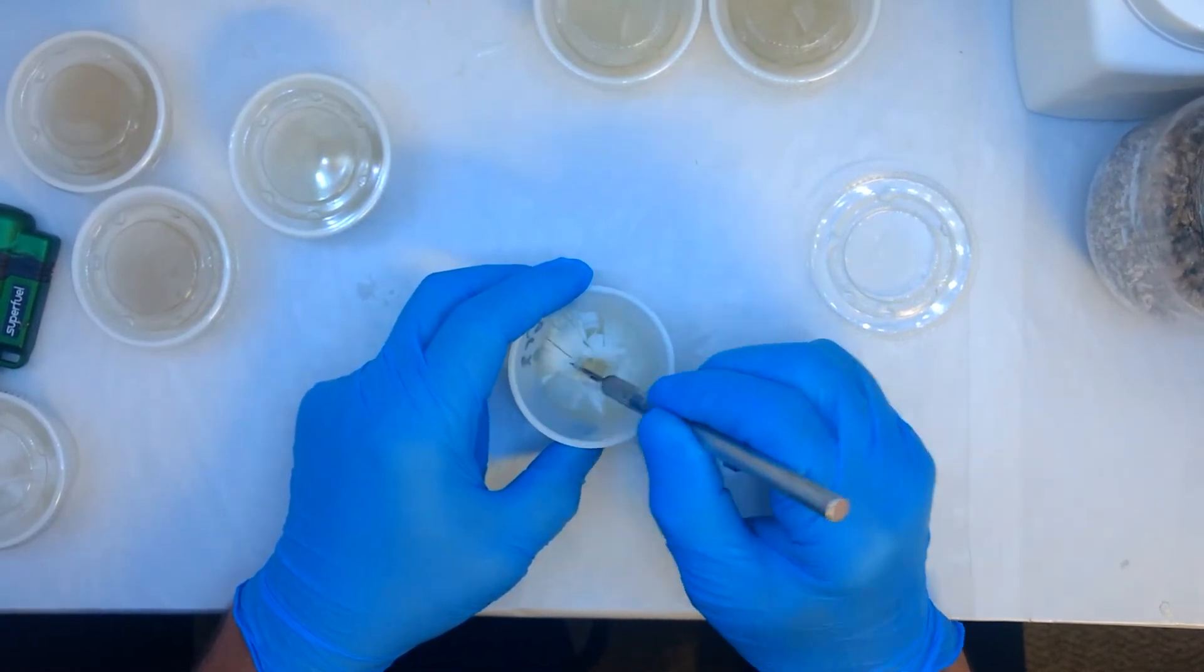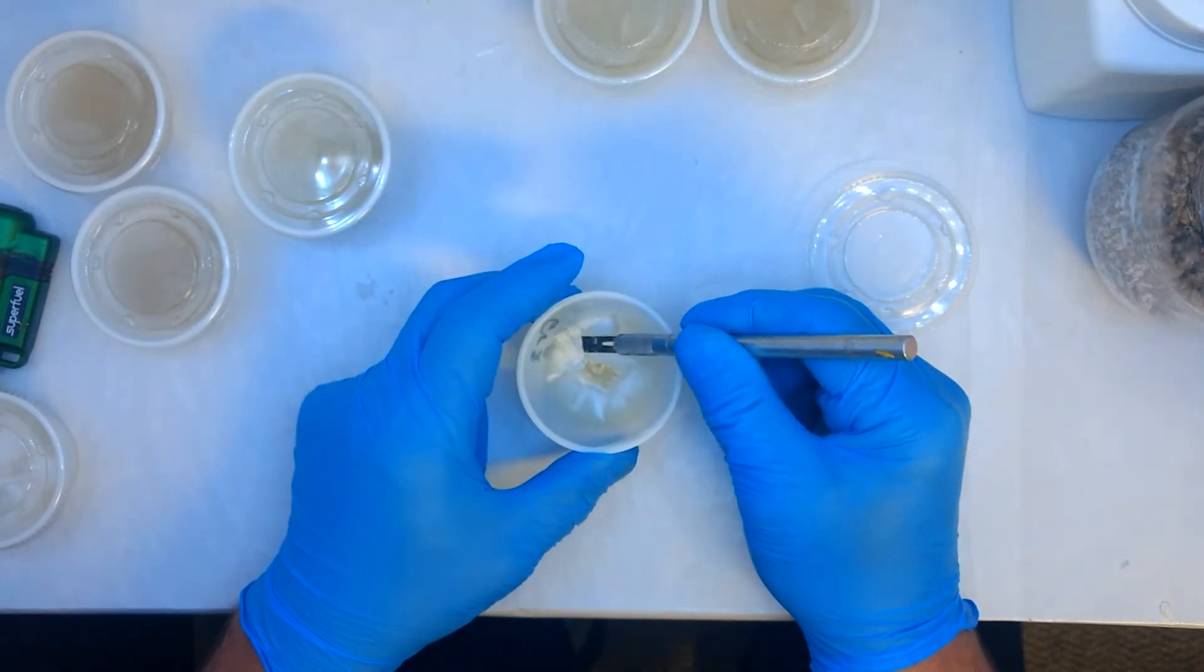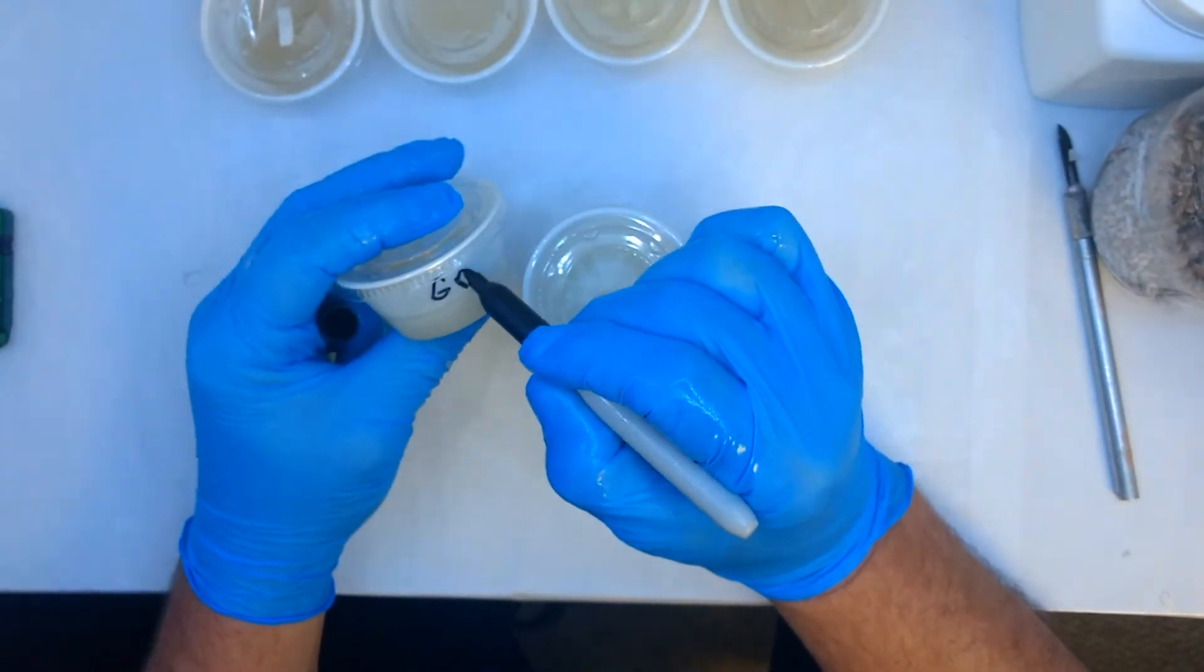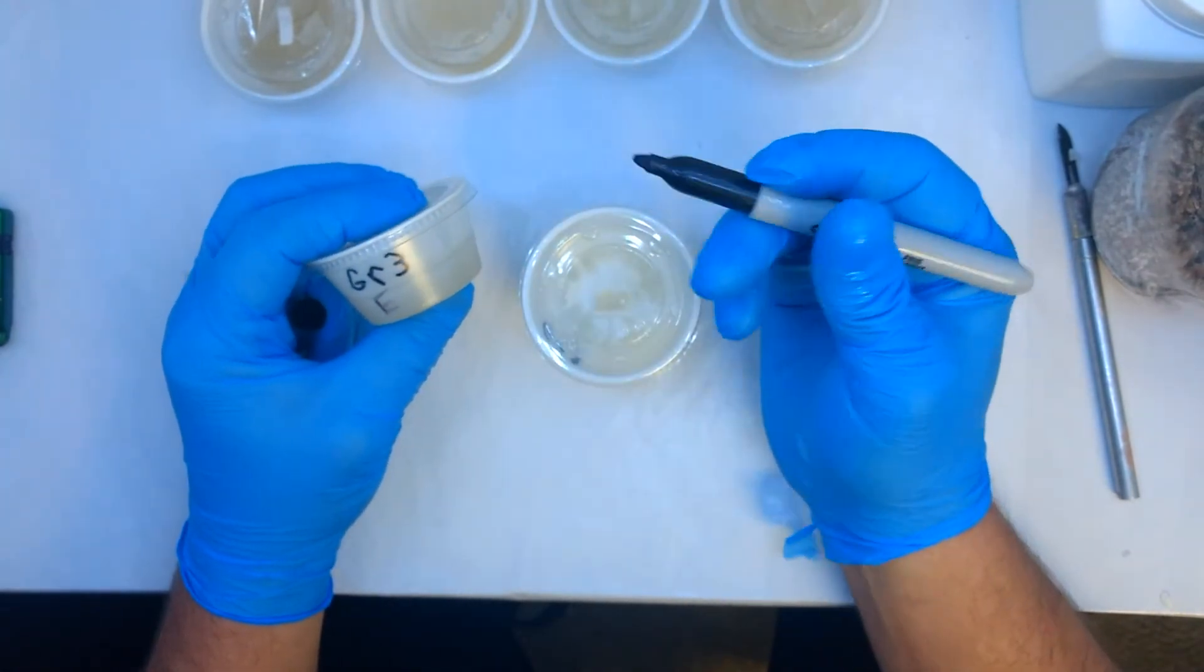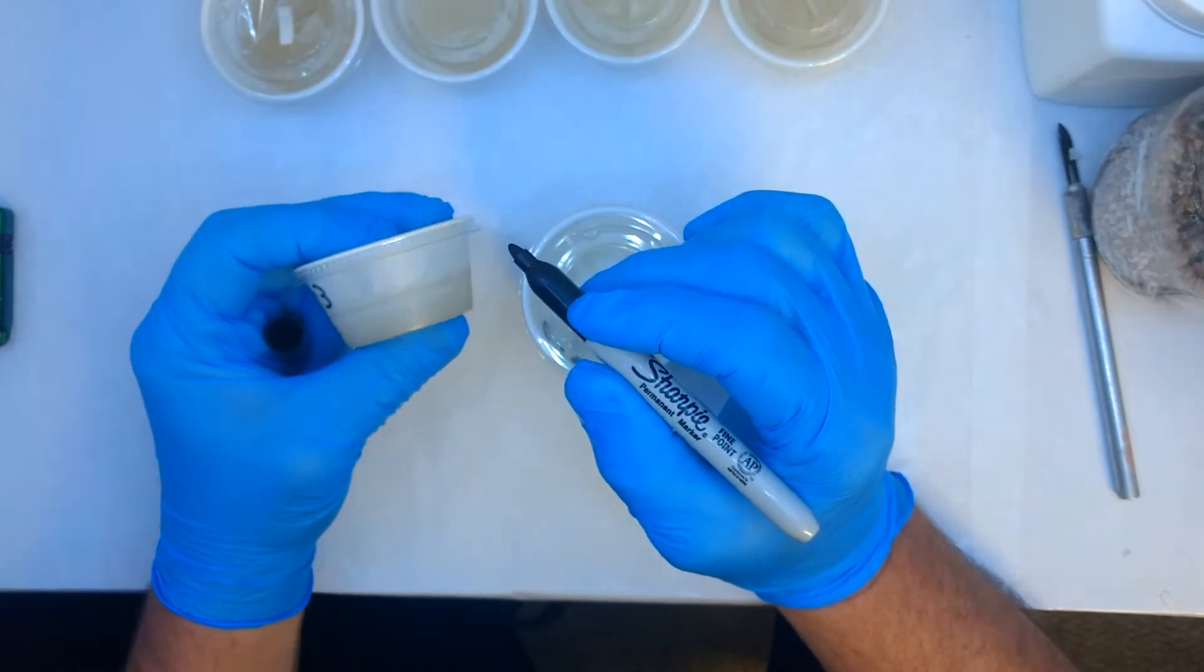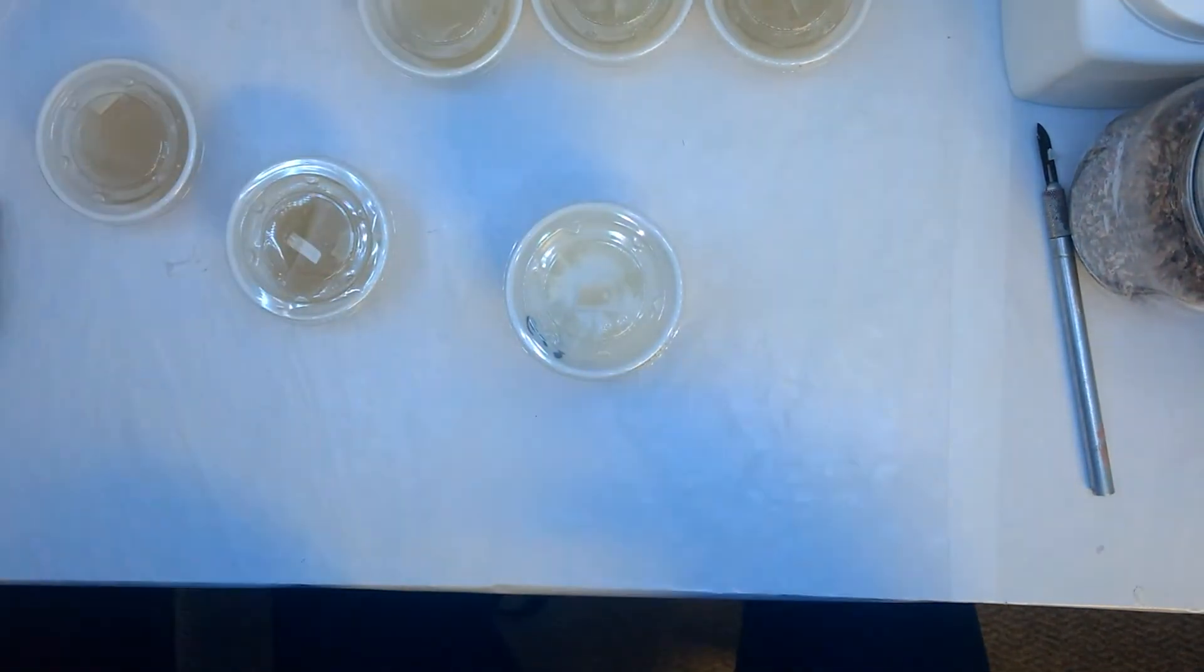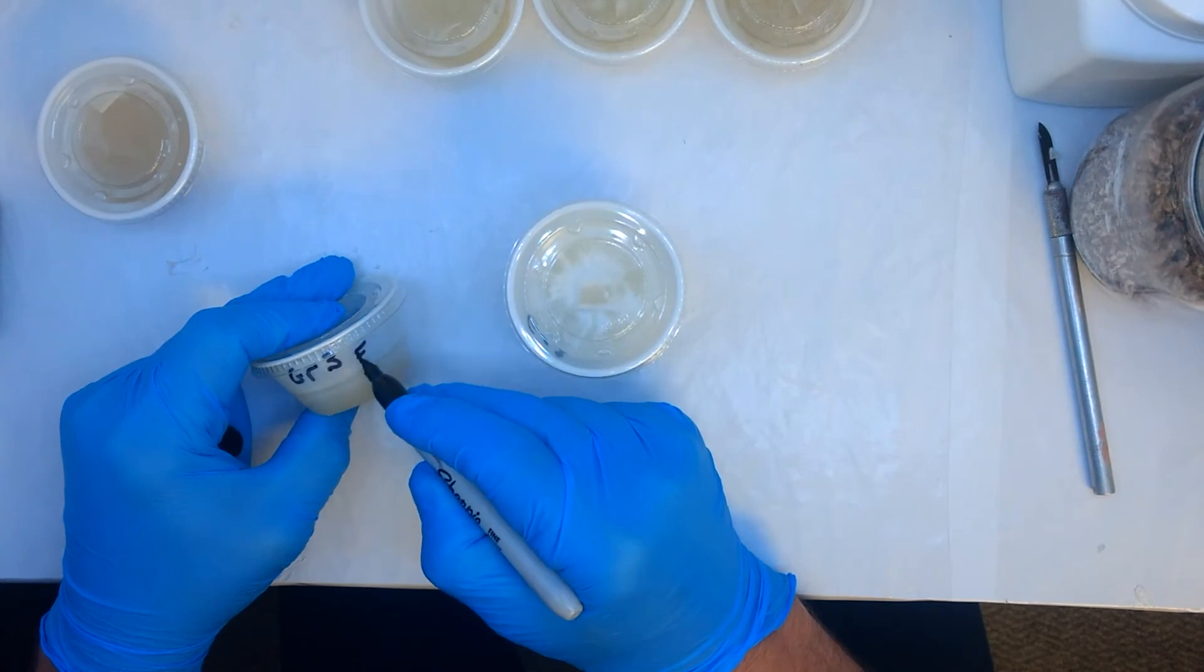Once you're done making your agar sectoring plates, you want to label everything properly with the strain and the version. So this is Grain 3, this is the third time I've sectored it, and the date of course, you always need that. You also want to keep a book of acronyms on hand like I do.